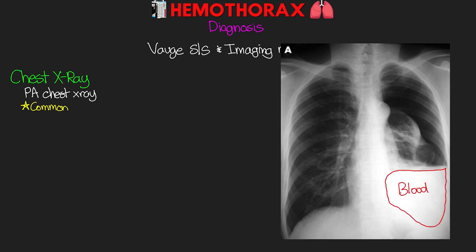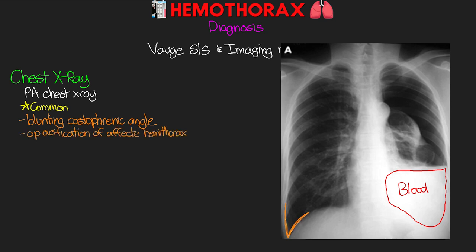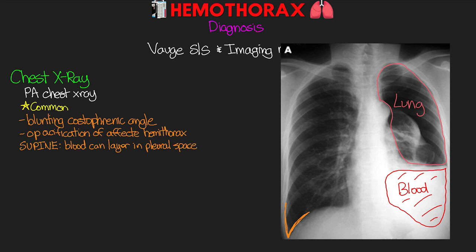What we're looking for on the chest x-ray is blunting of the costophrenic angle, which is down at the base of the lung on the lateral side, as well as opacification of the affected hemothorax. In this example it's pretty obvious because it's a large hemothorax — you can see the whole opacification here representing the blood, with the rest being lung tissue. One thing to keep an eye on is that in supine patients, blood can actually layer in the pleural space rather than forming a distinct collection.